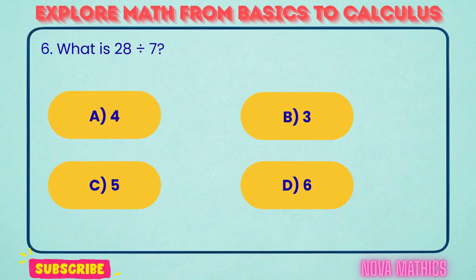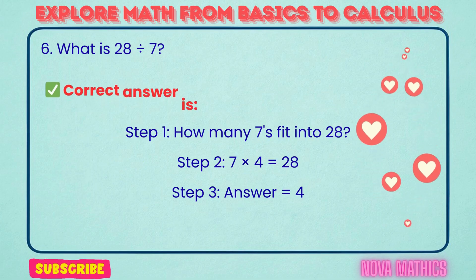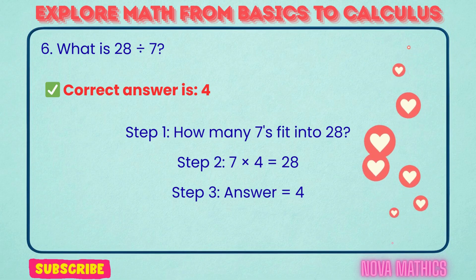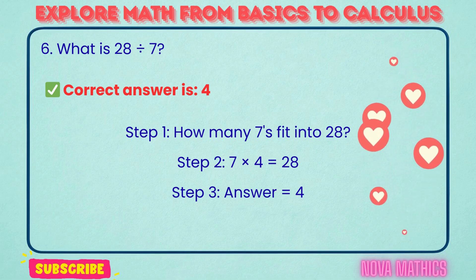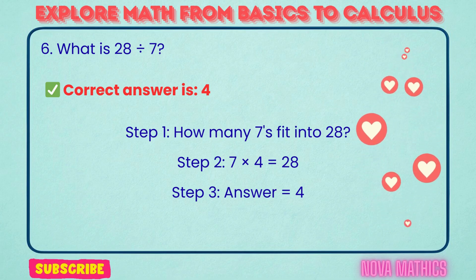6. What is 28 divided by 7? Correct answer is 4. 28 divided by 7 equals 4. We find this because 7 times 4 is 28.